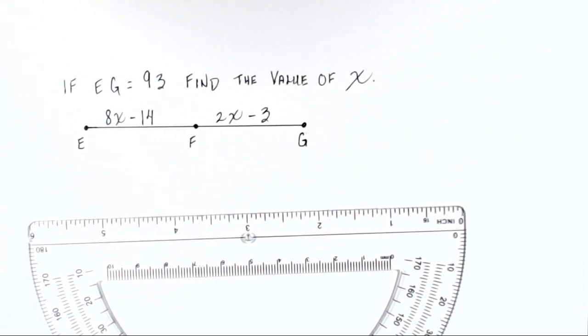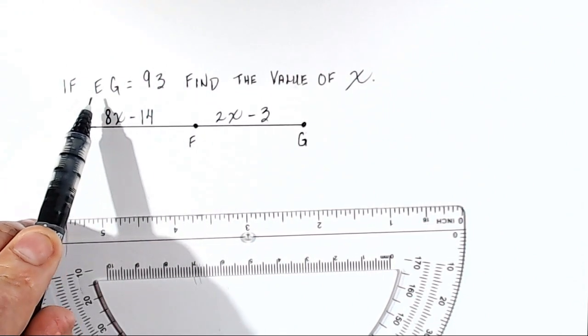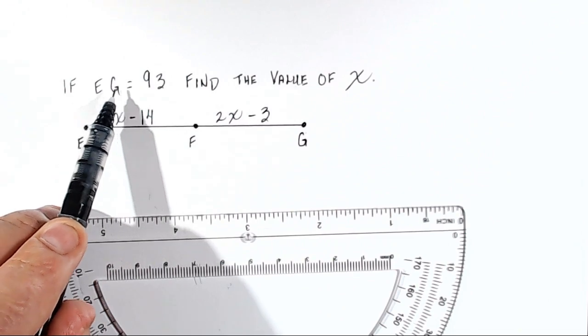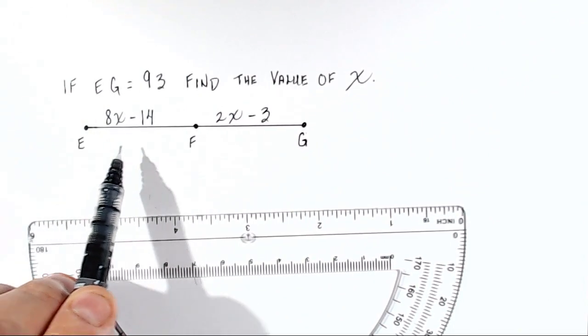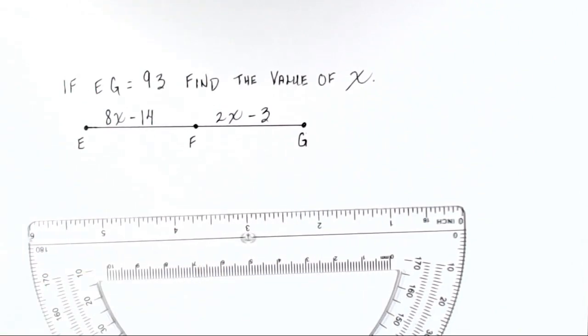Okay, let's first take a look at what we are given. If segment EG equals 93, so if the distance from E all the way over to G is 93, we need to know what the value of X is.